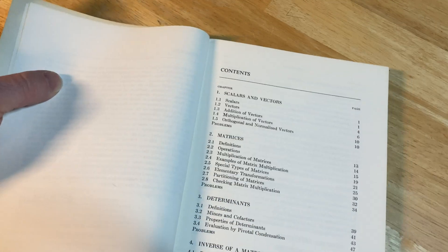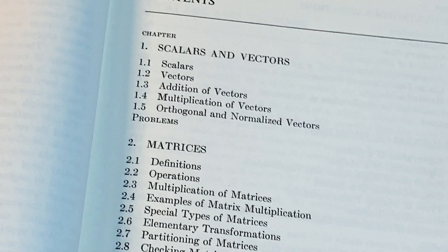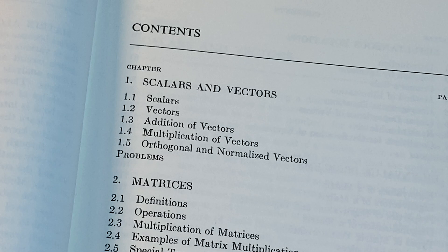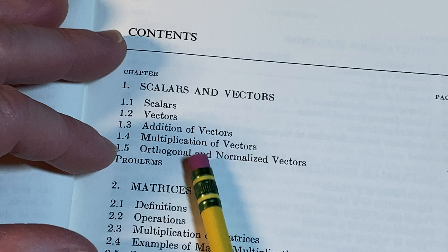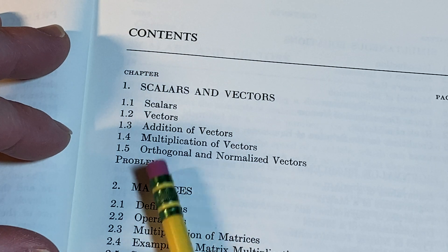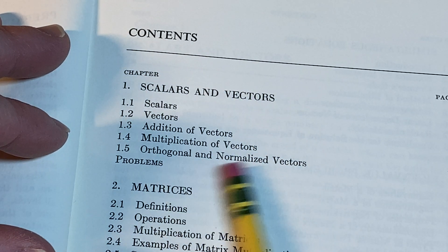And here are the topics. Contents. Scalars and vectors. We've got scalars, vectors, addition of vectors. This stuff is really important. It's not hard, but it's important. Multiplication of vectors, orthogonal and normalized vectors. Vectors are extremely important.